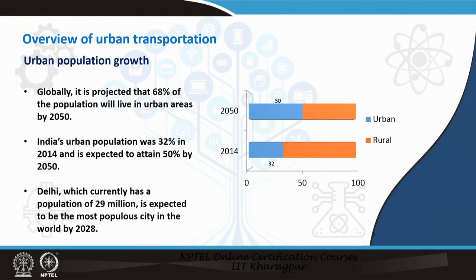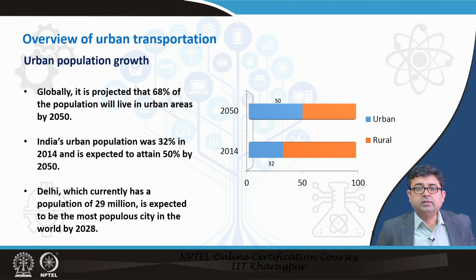It is expected that by 2050, almost 50 percent of India's population would be living in urban areas, which currently is about 32 percent. India has four metropolitan cities, with Delhi having the highest population of 29 million and expected to be the most populous city in the world by 2028. With such large numbers of people living in urban areas, this is definitely putting stress on the infrastructure available in these cities.